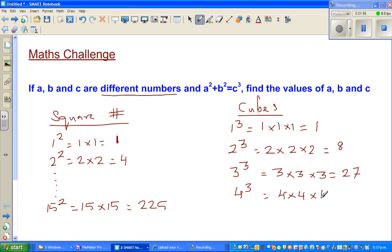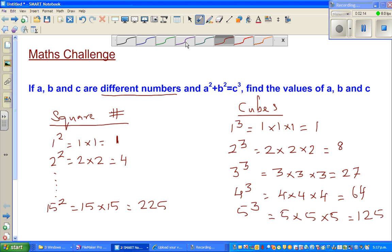3³ = 3 × 3 × 3 = 27, 4³ = 4 × 4 × 4 = 64, 5³ = 5 × 5 × 5 = 125. You can pause this video if you're interested to solve this puzzle.